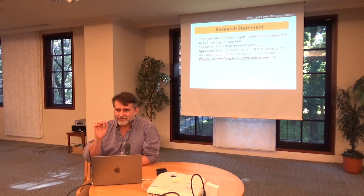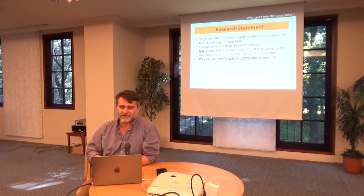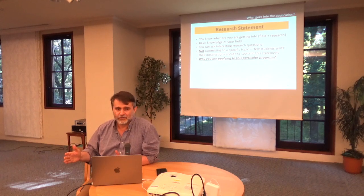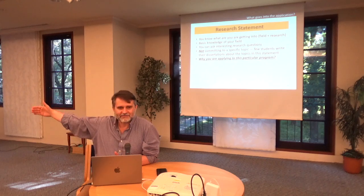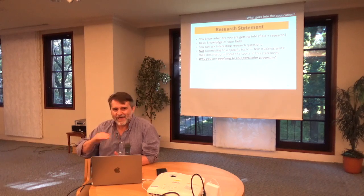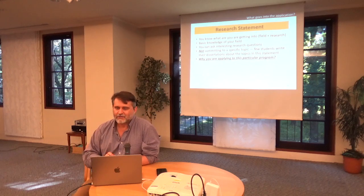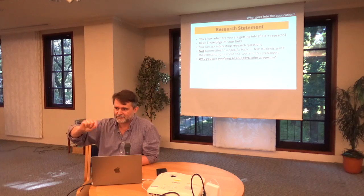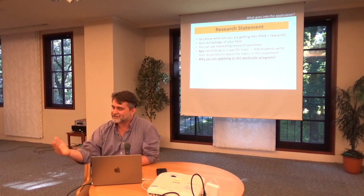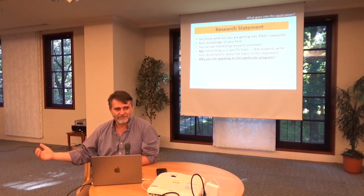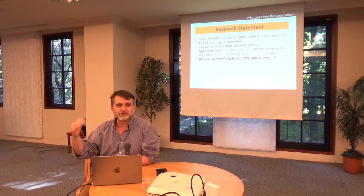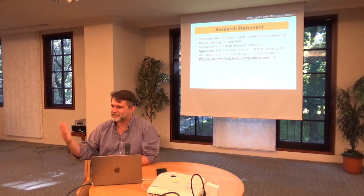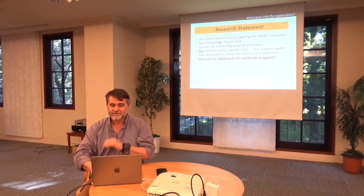Your research statement should be tailored to the place you're applying to. In a department like mine, we get 150 applications and admit six to eight students — there are probably 30 to 40 students who could all do excellent work. How do we pick? We look for applicants whose stated research interests overlap significantly with the research interests of professors in our department. So when you write your research statement, see what the professors in that department research and write your statement to show that you share interests with them. If you're applying to five or six different universities, your research statement might need to be slightly different for each place to show that match of research interests.